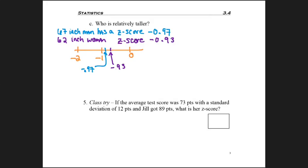So a lot of times I like to take a look at a number line. And so thinking about negative numbers going negative 1 down to negative 2, negative .97 is closer to negative 1 than negative .93 is. So that tells us the 62 inch tall woman is relatively taller for her sex. So this is a case where we use position of different sets of data, but then we could compare these different sets of data.